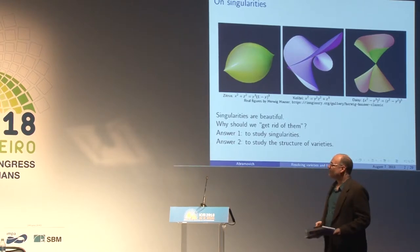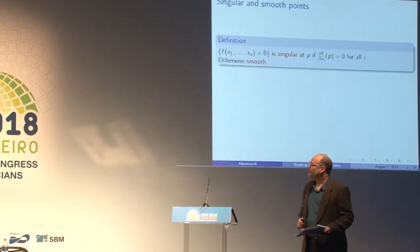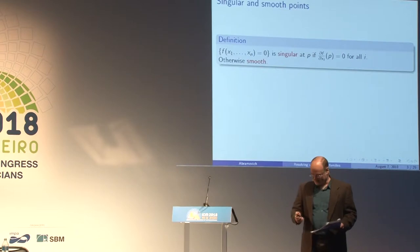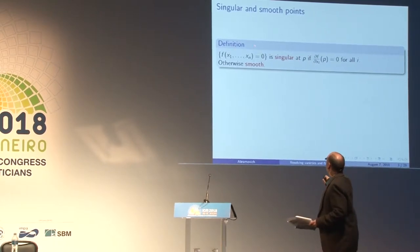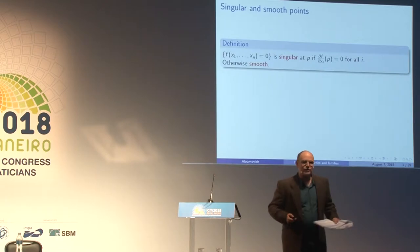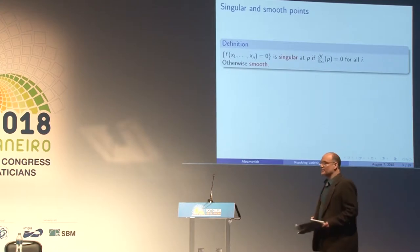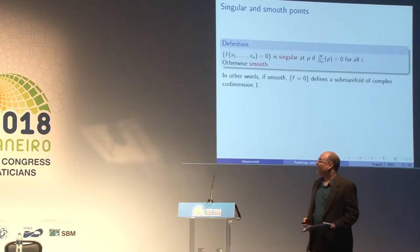Let's remind ourselves of what we mean by singularities and what we mean by resolution of singularities. If you have a hypersurface, it is singular at the point P if all derivatives are zero, just like when you discuss manifolds inside R^n. Otherwise it is smooth — that is, smooth if and only if F equals zero defines a submanifold of complex co-dimension one.